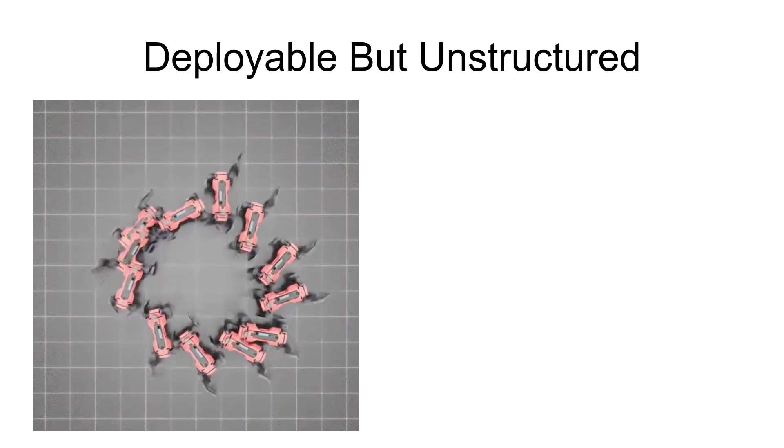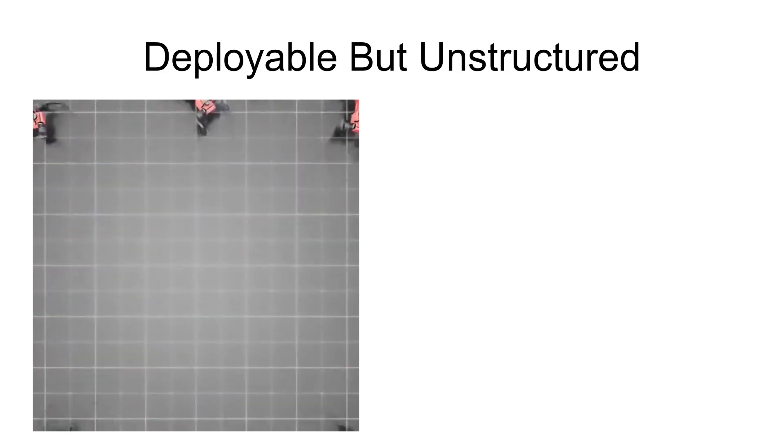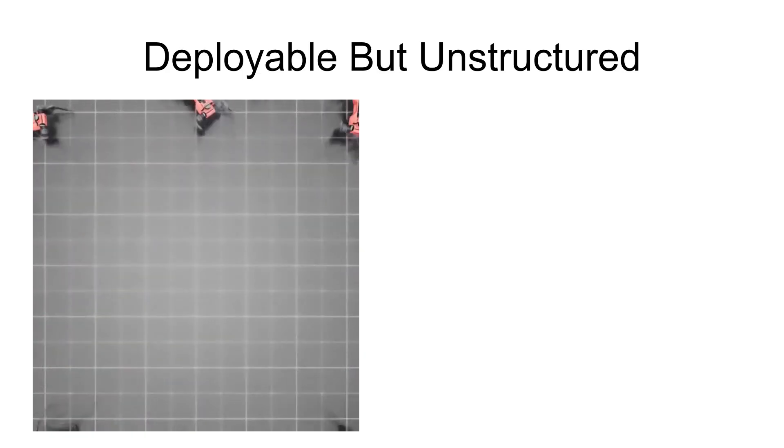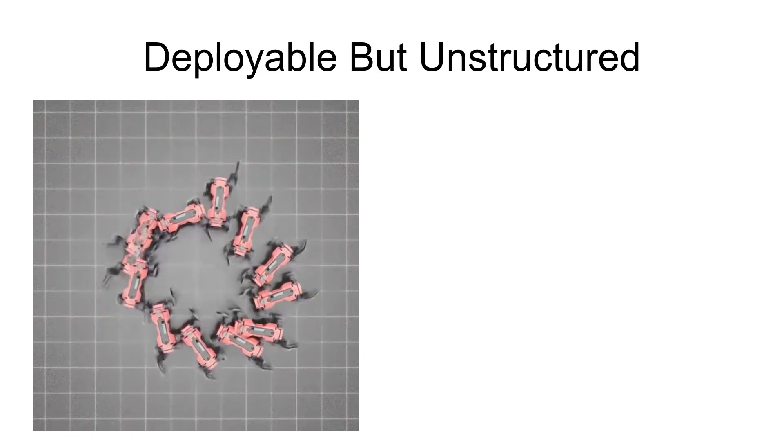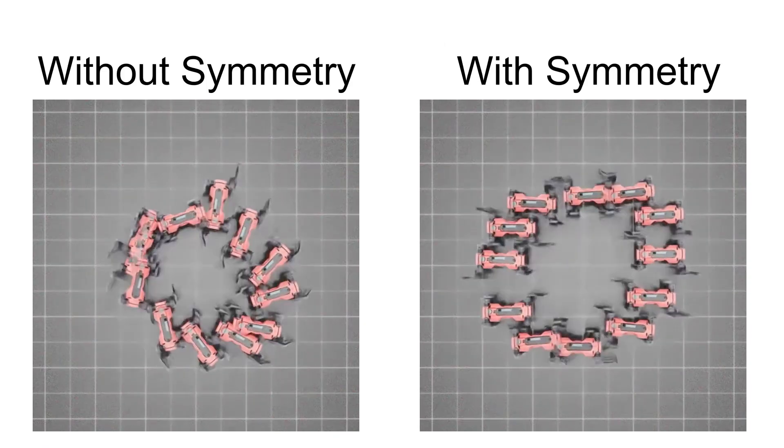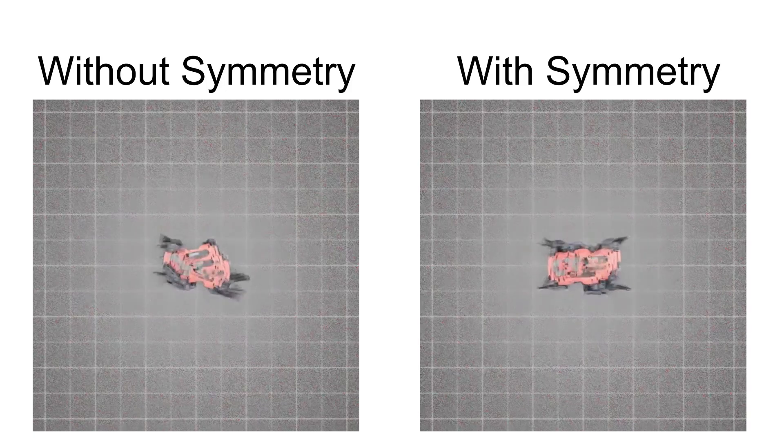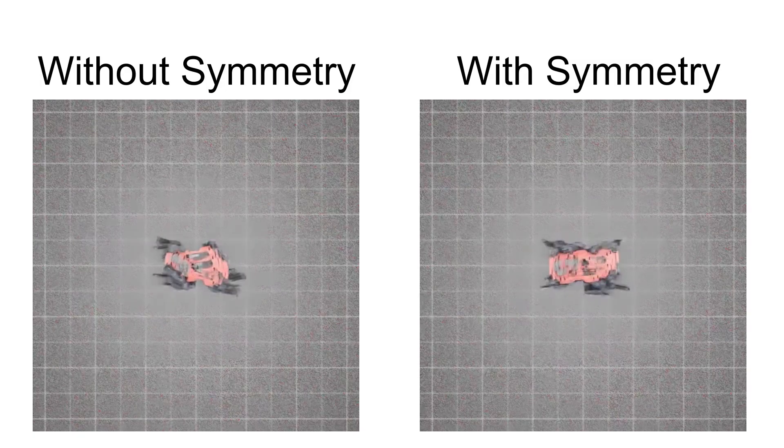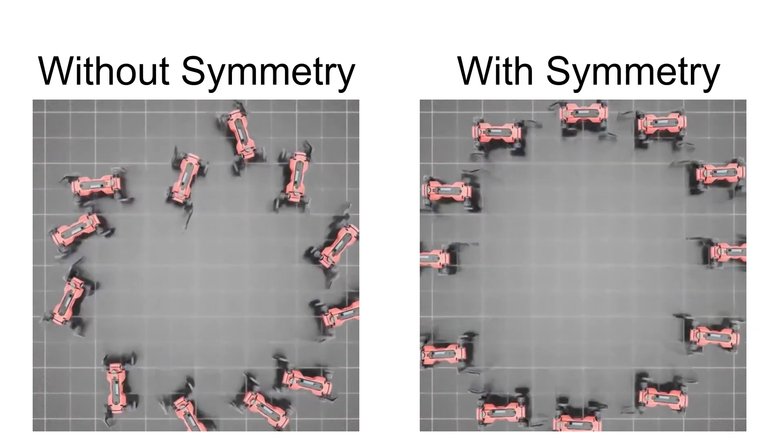However, they can still be arbitrary and unstructured. For example, the agent might learn to walk left very differently from how it walks right. To solve this, we introduce symmetry augmentation, which embeds knowledge of the robot's morphology directly into the learning process. A key contribution here was designing mirroring functions for the latent skills.